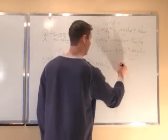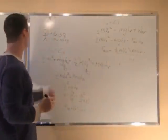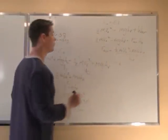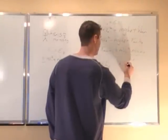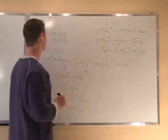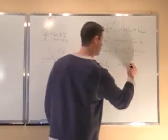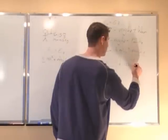Plug our numbers in. We get 1/2, the mass of the baseball is 0.15, the initial velocity is 15 squared,